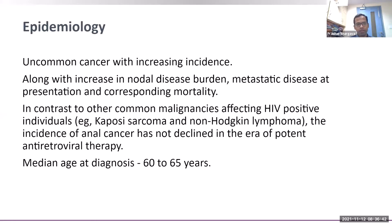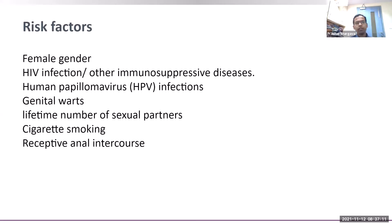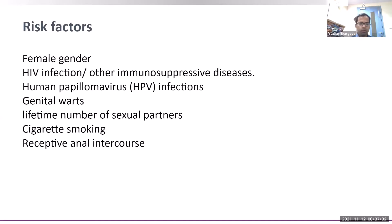Epidemiology: anal cancer is uncommon, but its incidence is increasing over the past decade, along with increased nodal disease burden at presentation and increased corresponding mortality. In contrast to other malignancies affecting HIV-positive individuals, the incidence of anal cancer has not declined even after the use of potent ARTs. Median age of diagnosis is around 60 to 65 years. Risk factors include female sex, HIV infection, immunosuppressive conditions, chronic post-transplant status, HPV infection, genital warts, lifetime number of sexual partners, smoking, and receptive anal intercourse.